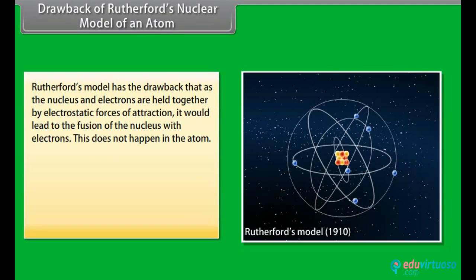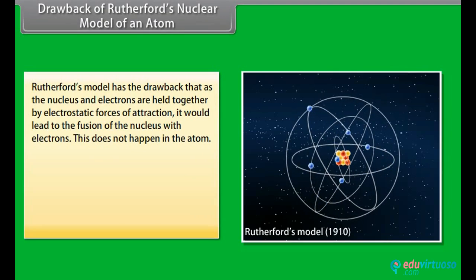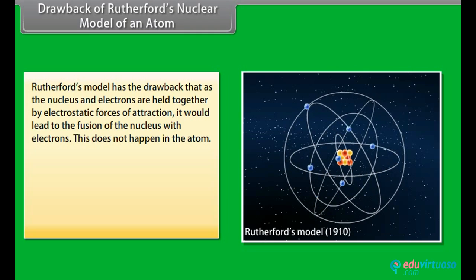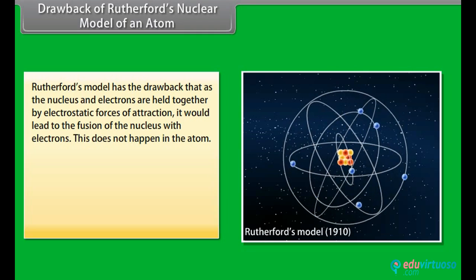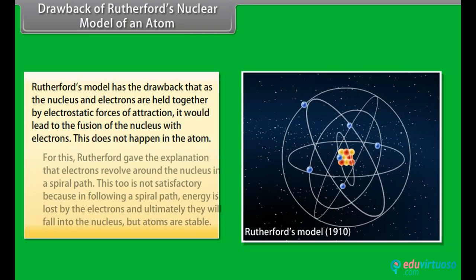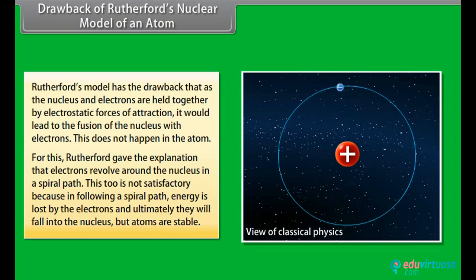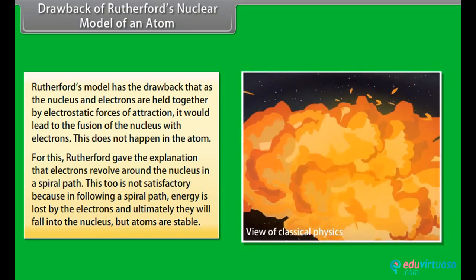Drawback of Rutherford's nuclear model. Rutherford's model has the drawback that as the nucleus and electrons are held together by electrostatic forces of attraction, it would lead to the fusion of the nucleus with electrons. This does not happen in the atom. For this, Rutherford gave the explanation that electrons revolve around the nucleus in a spiral path. This too is not satisfactory because in following a spiral path, energy is lost by the electrons and ultimately they will fall into the nucleus but atoms are stable.